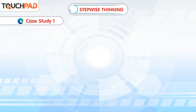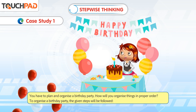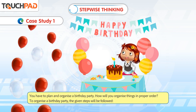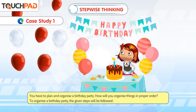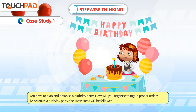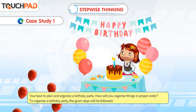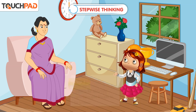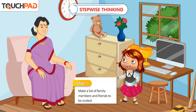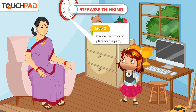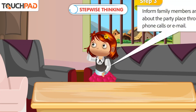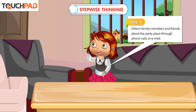Case Study 1: You have to plan and organize a birthday party. How will you organize things in proper order? To organize a birthday party, the given steps will be followed. Step 1: Make a list of family members and friends to be invited. Step 2: Decide the time and place for the party. Step 3: Inform family members and friends about the party place through phone calls or email.